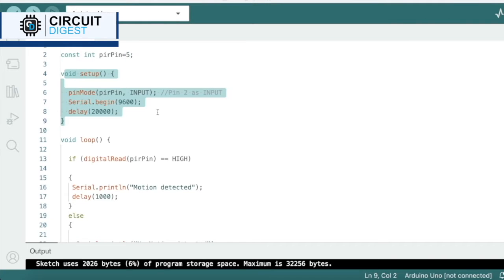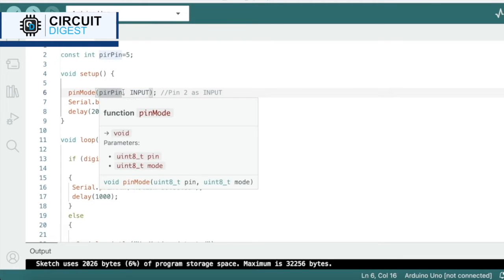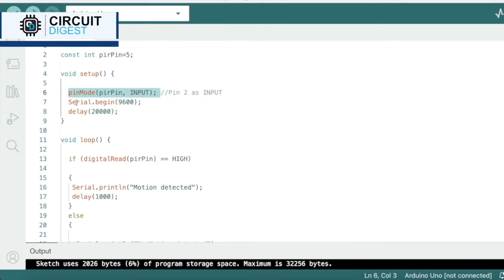Then, in the void setup section, we declare that this variable is basically a sensor. It's an input device and then we start a serial communication giving 9600 as the baud rate and we give a delay of 20,000 milliseconds.